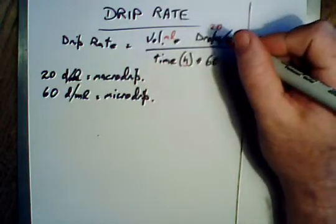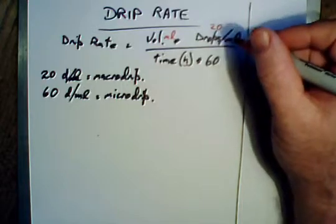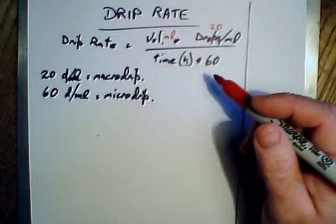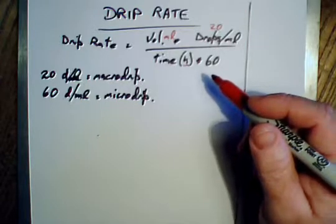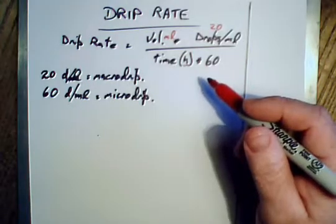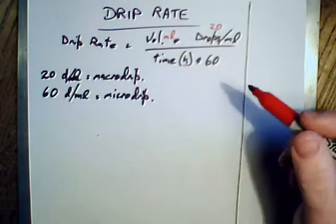If there is a finer type of drip, often you'll find it's got less surface tension on the actual drop itself. It's a much finer setup. It'll be 60 drops per milliliter.